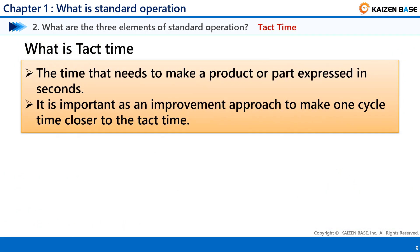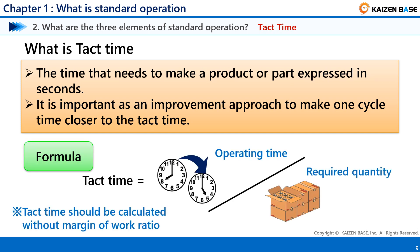The first element is Takt Time. Takt Time refers to the time needed to make a product or part, expressed in seconds, in daily production. It is important as an improvement approach to make one cycle time closer to the Takt Time. The formula for Takt Time is: Operating Time divided by Required Quantity. Takt Time should be calculated without a margin for work ratio.